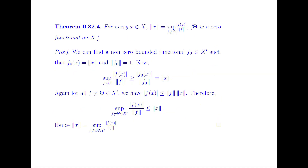For every X belonging to X, norm(X) equals the supremum of |f(X)| / norm(f), where f is a nonzero functional on X. We can find a nonzero bounded functional F₀ in the conjugate space of X such that F₀(X) = norm(X) and norm(F₀) = 1. Then the supremum of |f(X)| / norm(f) is greater than or equal to |F₀(X)| / norm(F₀) = norm(X).